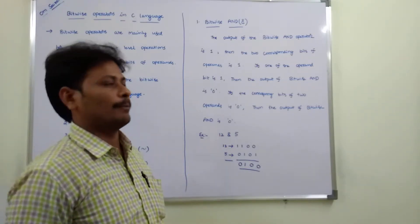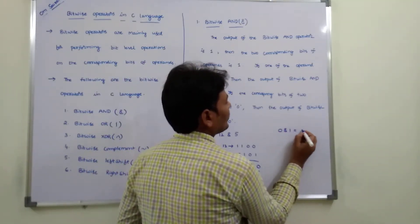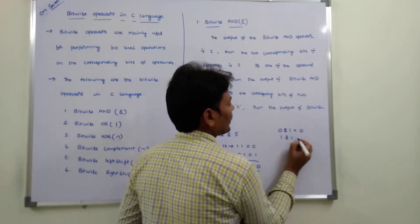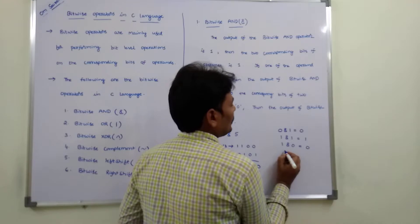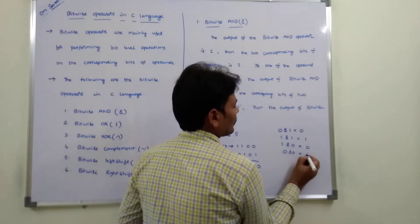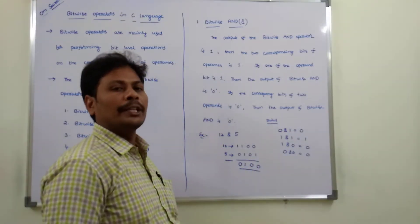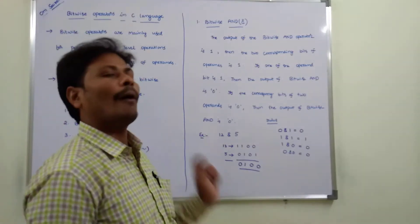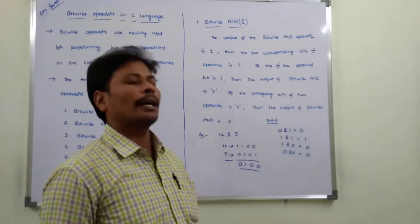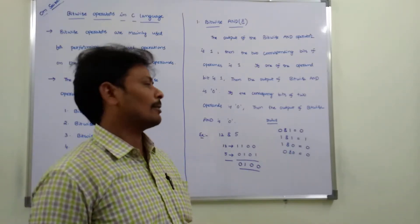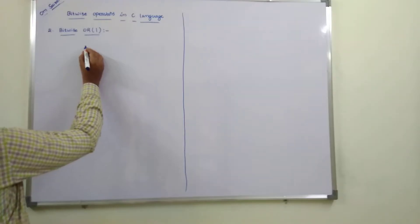The result of bitwise AND operator performed on 12 and 5: 0 AND 1 is 0, 1 AND 1 is 1, 1 AND 0 is 0, 0 AND 0 is 0. So these are the rules to follow when performing the bitwise AND operation on two operands.